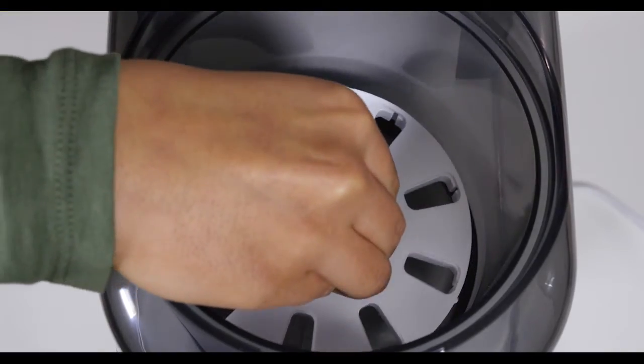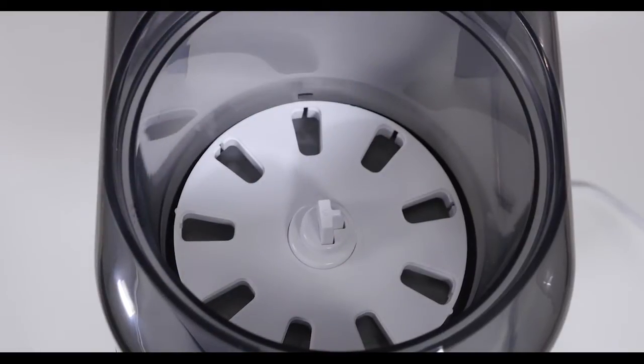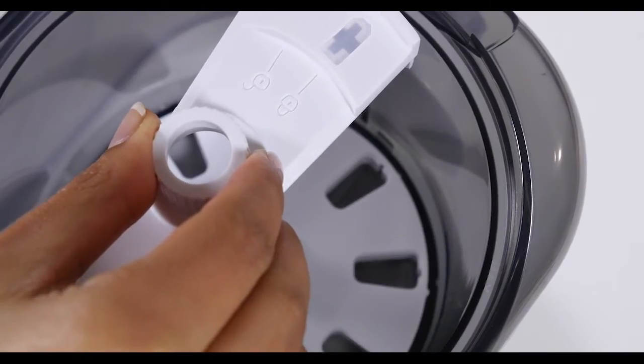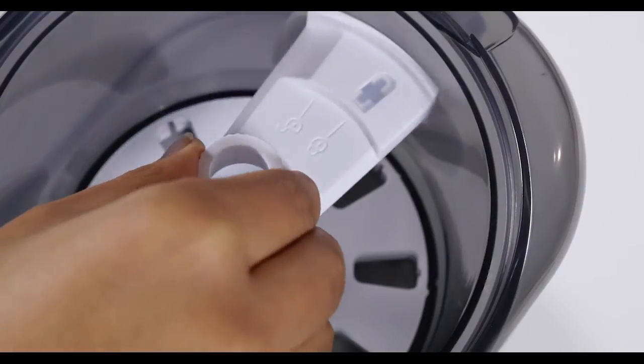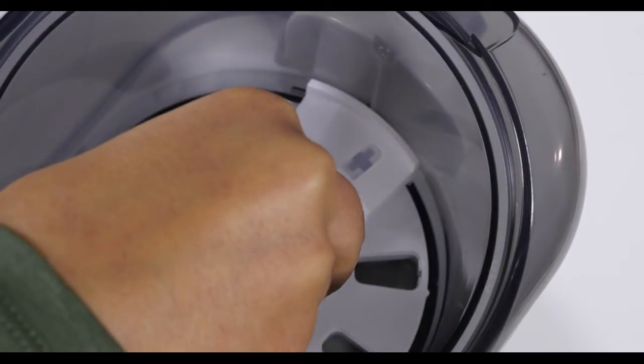Slide the wheel lock onto the drive shaft, matching up the engraved unlocked icon with the line on the formula container. Be sure to align with the line on the formula container.